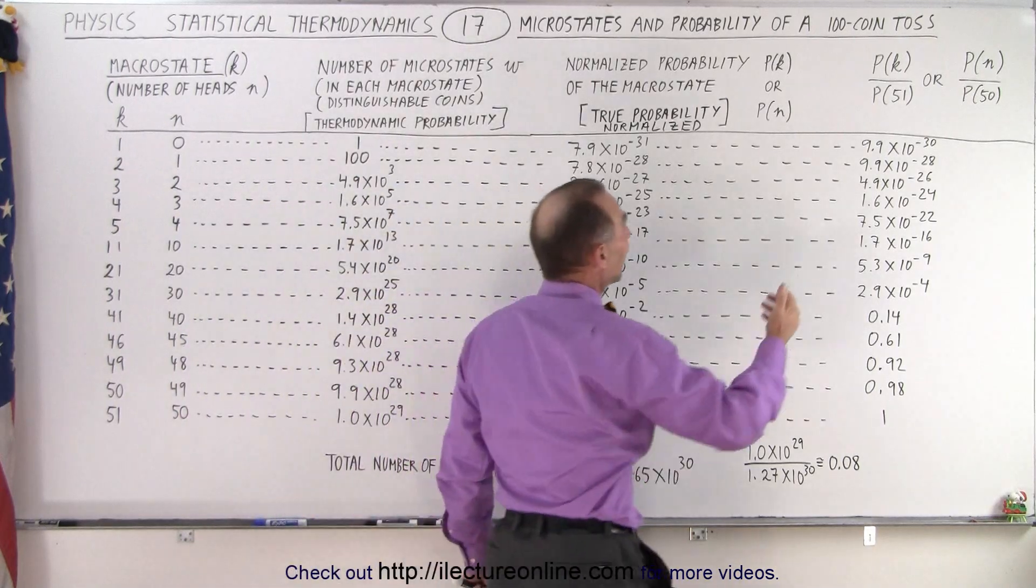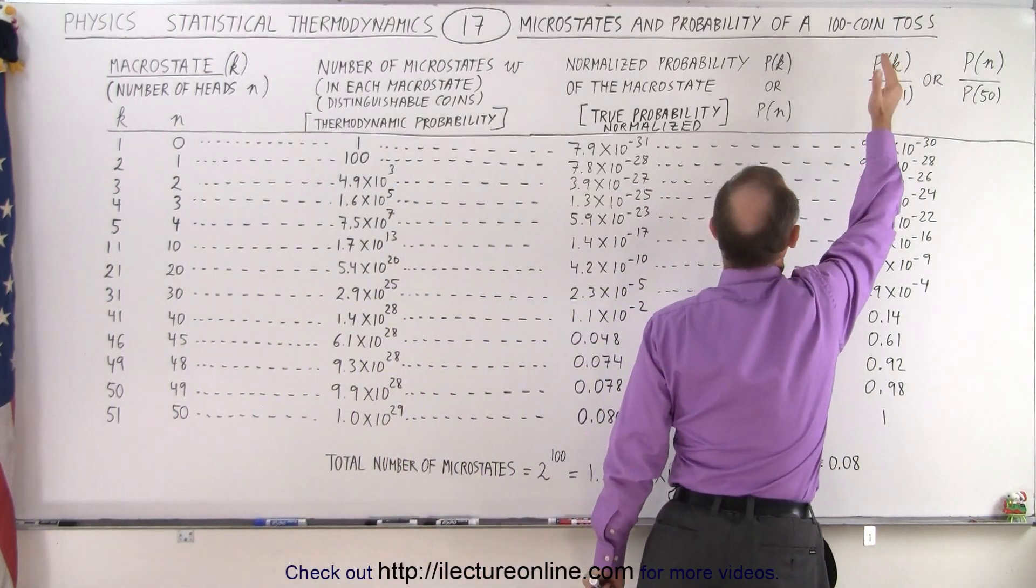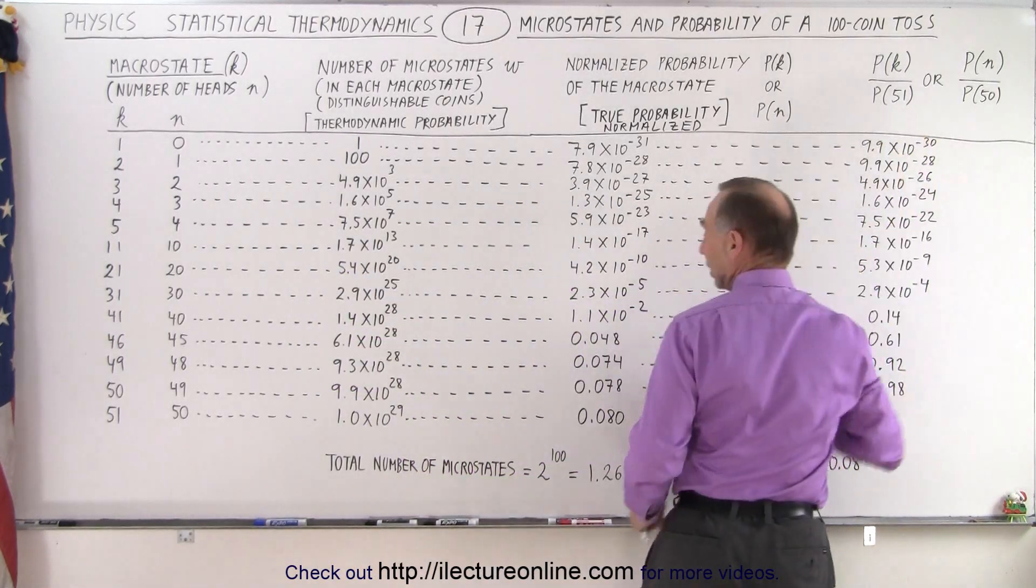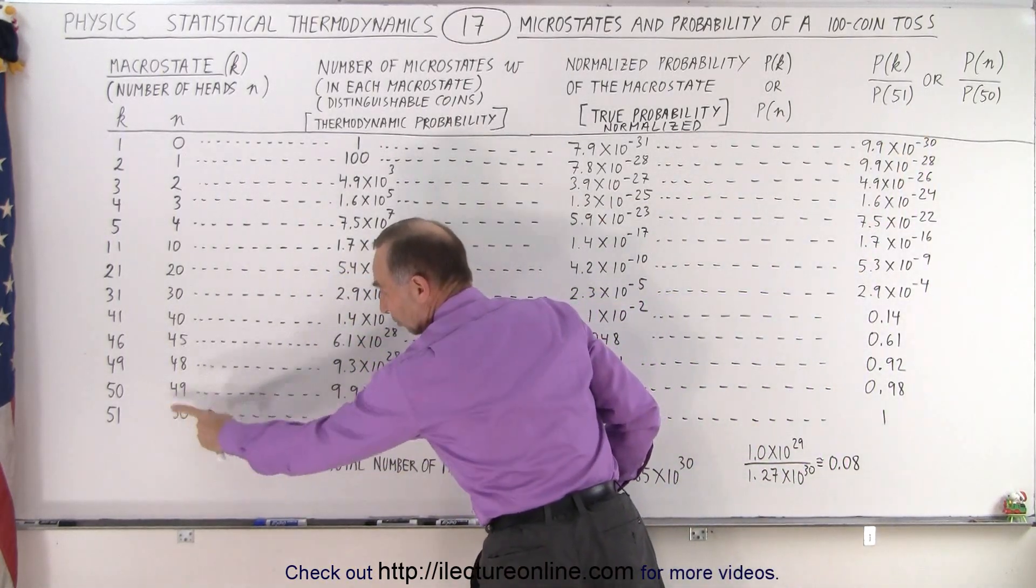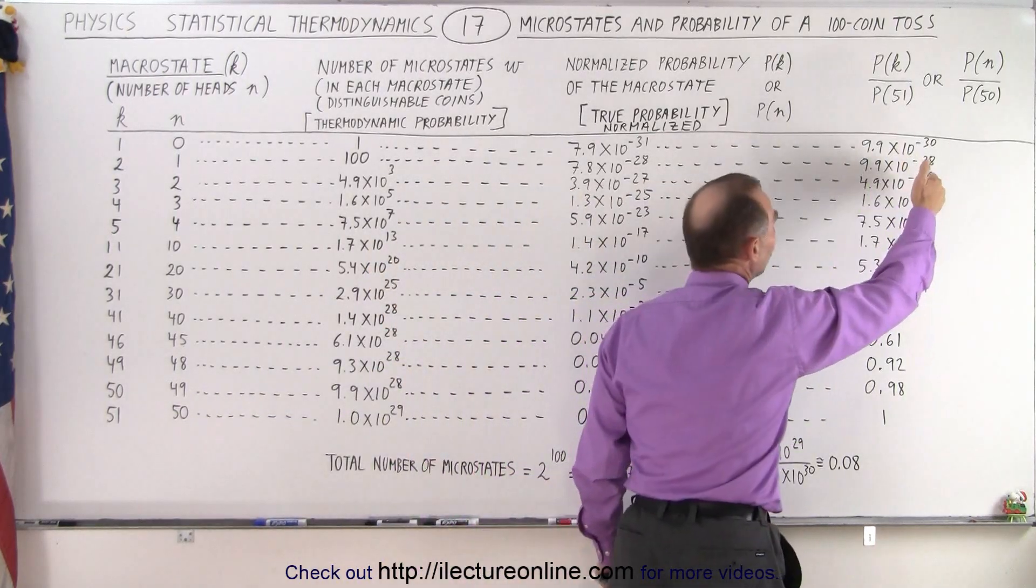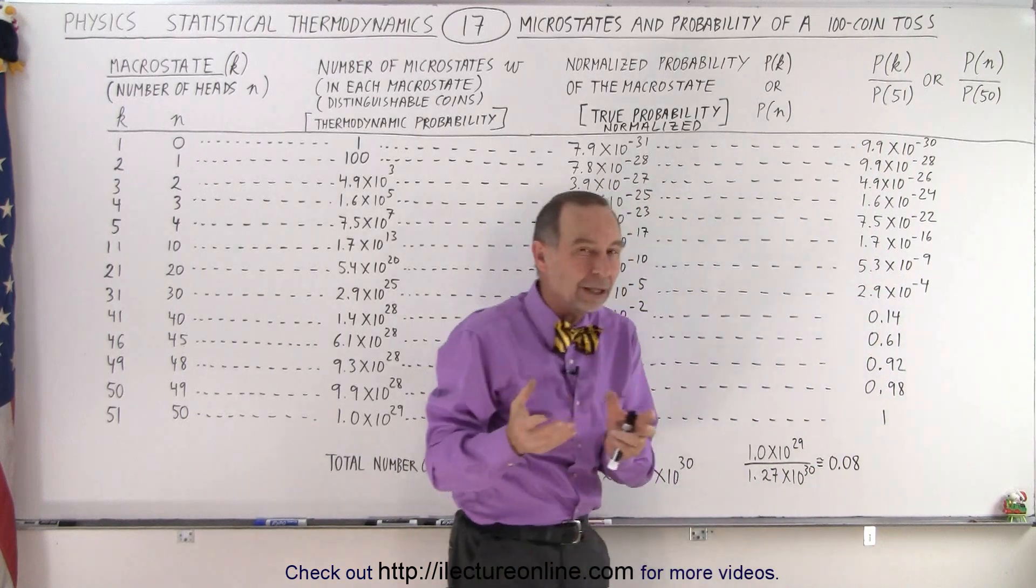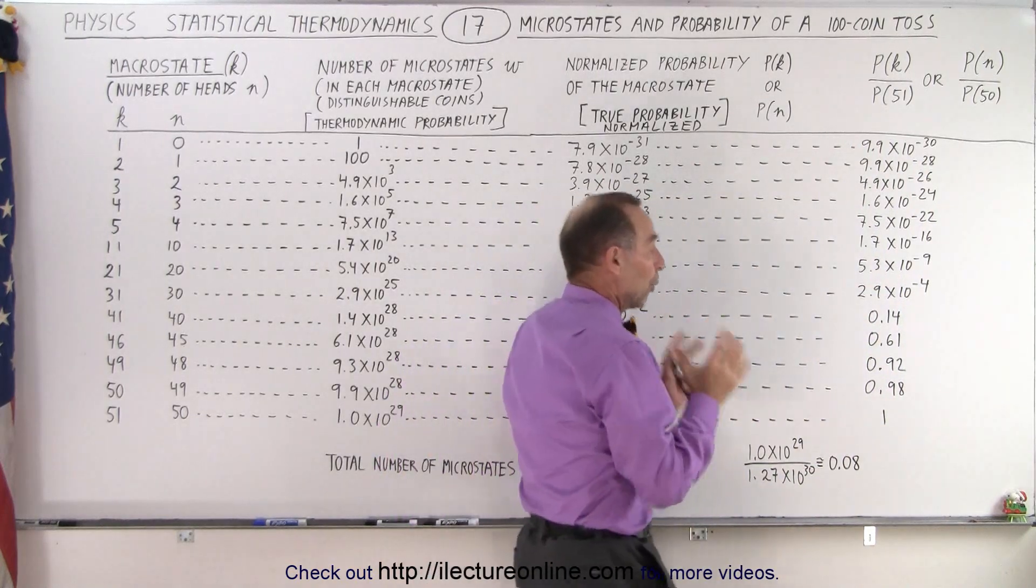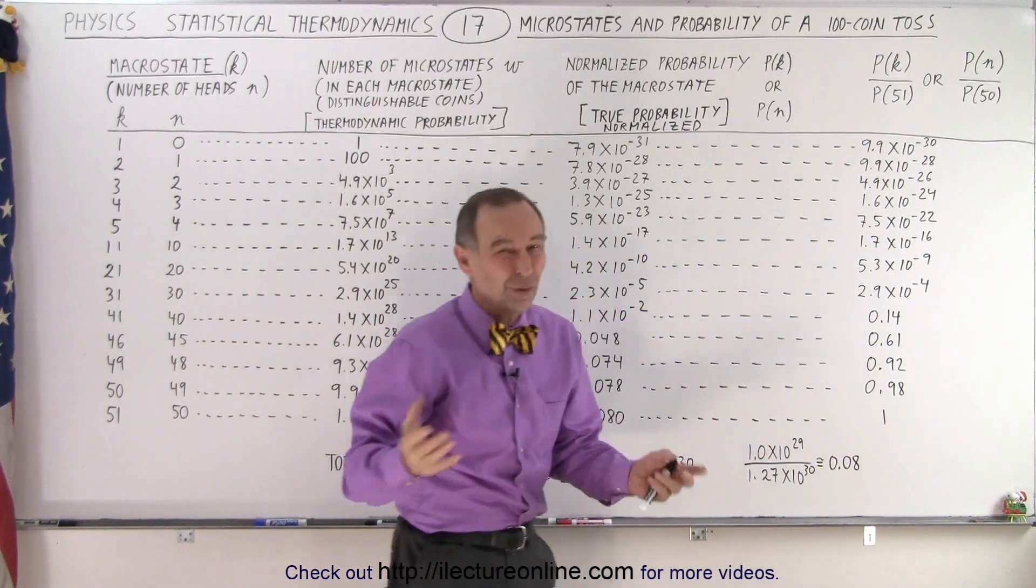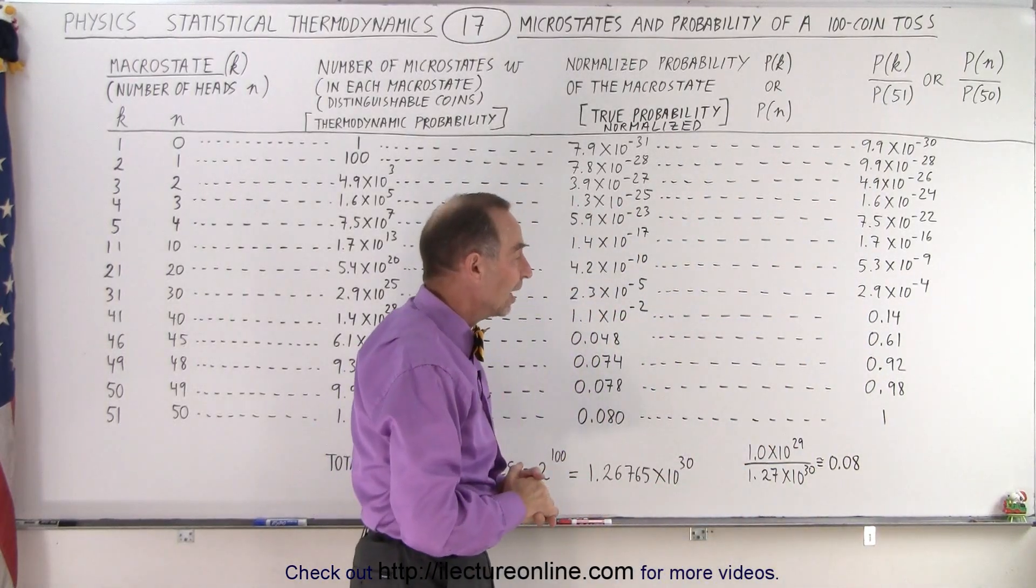So if you take any one of the macrostates, and you look at the probability, and then you divide that by the probability of the 51st macrostate, where we have 50 heads, that ratio will give you the probability of that macrostate occurring relative to the most probable macrostate, which is the one with 50 heads.